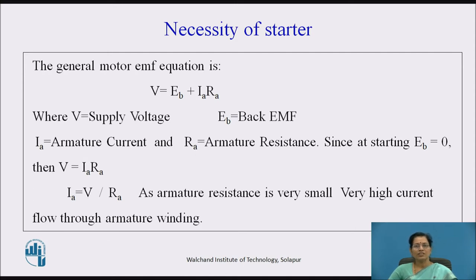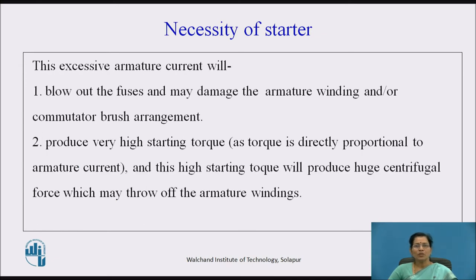As the armature resistance is very small, very high current flows through the armature winding, and due to that, the armature winding may burn. To limit the starting current through the armature winding, we use starters — that means a resistance is inserted in series with the armature winding. This excessive armature current will blow out the fuses and may damage the armature winding or commutator brush arrangement.